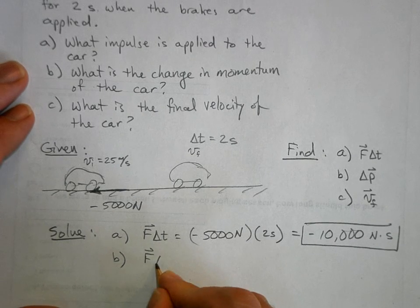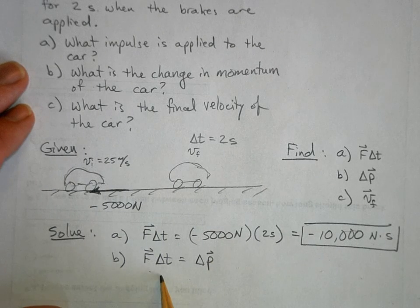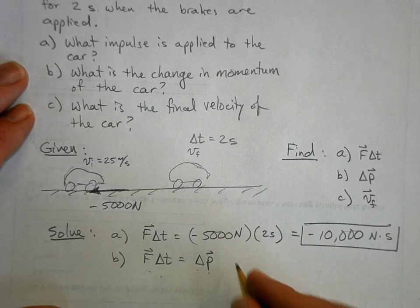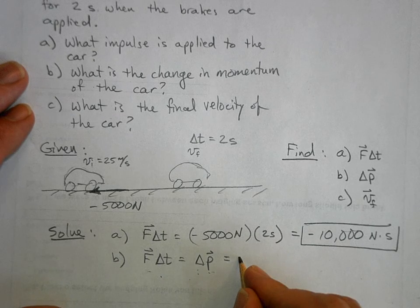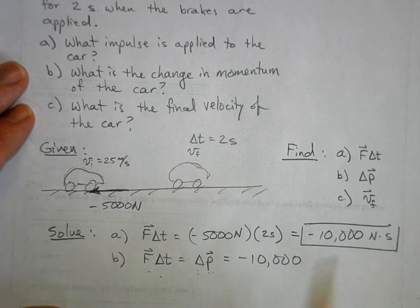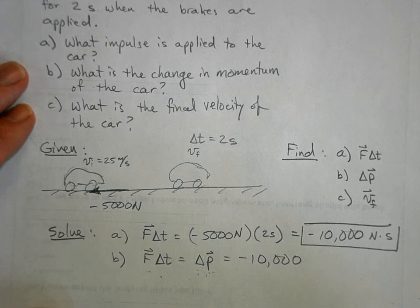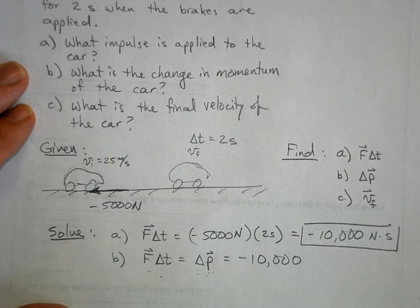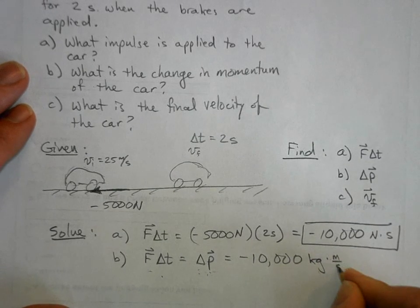Well now we're going to use the impulse momentum theorem that says that an impulse is equal to a change in momentum, which they're the same thing, so you just take this answer. Now what I like to do when I'm expressing it as a change in momentum is leave it in the units for momentum. Momentum is mass times velocity, kilograms times meters per second.